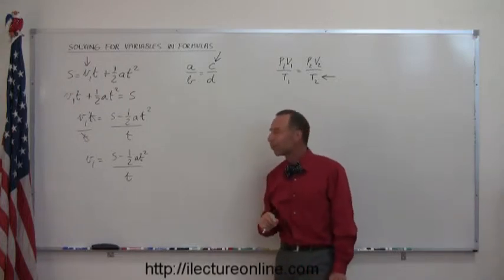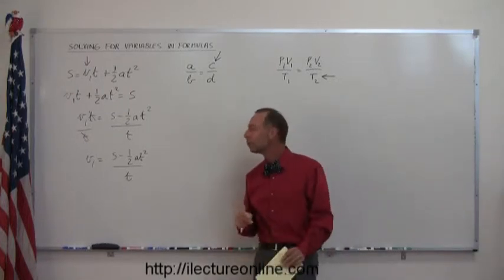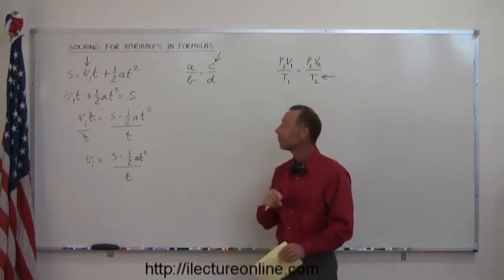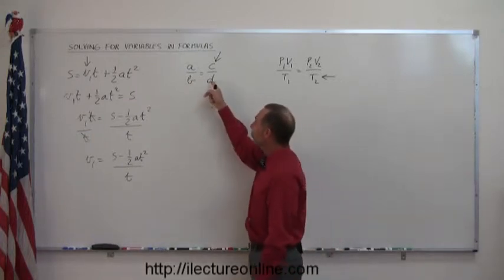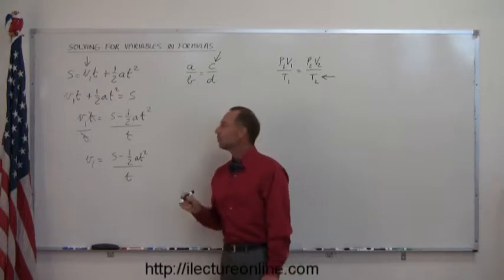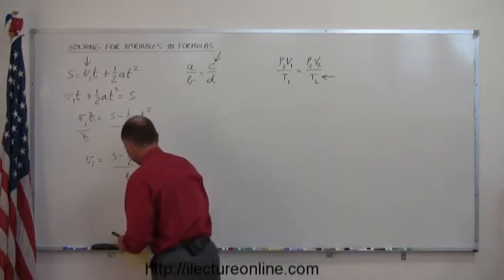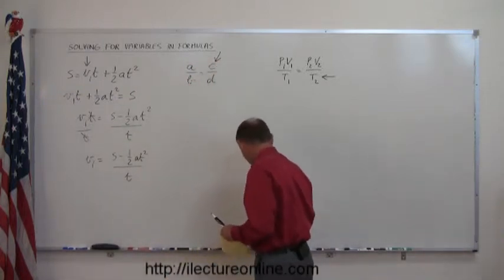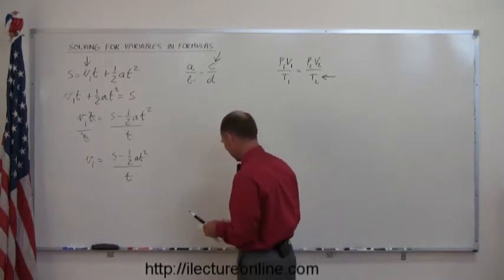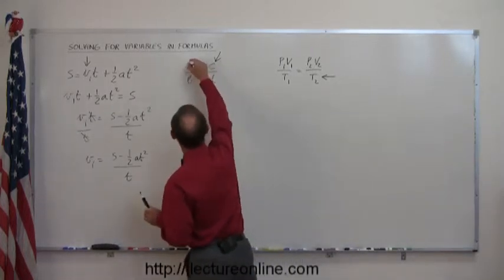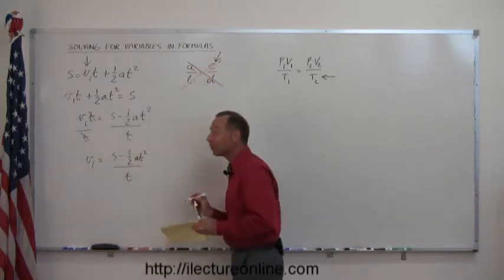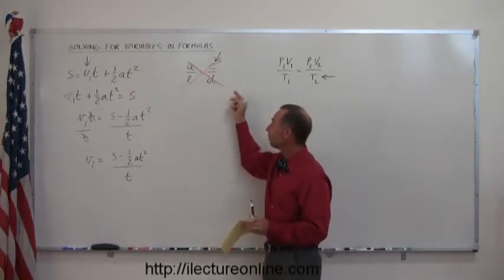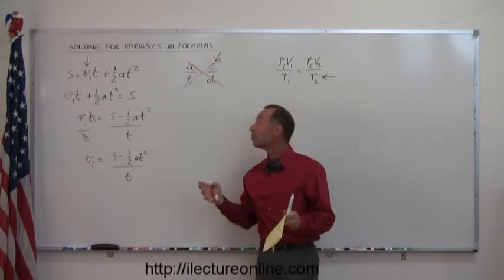This thing right here is one of my personal favorites because it causes a lot of confusion among students and it actually is a really easy thing to work with. It turns out that we can move anything across the diagonal. If I draw these diagonal lines like this, I'm simply showing you that if you have one fraction set equal to another fraction, it allows you to move things across the diagonal without changing anything.